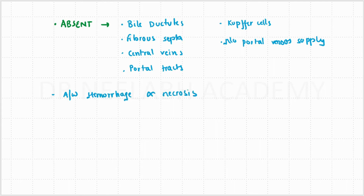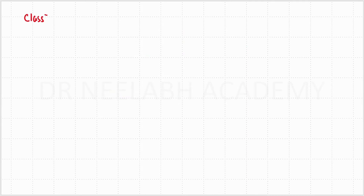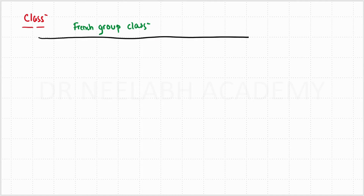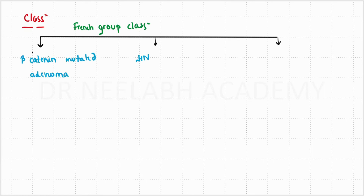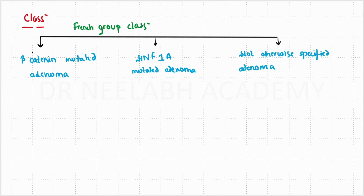These are also associated with hemorrhage and necrotic patches. Coming on to the classification described by a French group, these lesions are divided into three groups: beta-catenin mutated adenomas, HNF-1A mutated adenomas, and not otherwise specified adenomas. The most malignant transformation risk is associated with beta-catenin mutated adenoma.